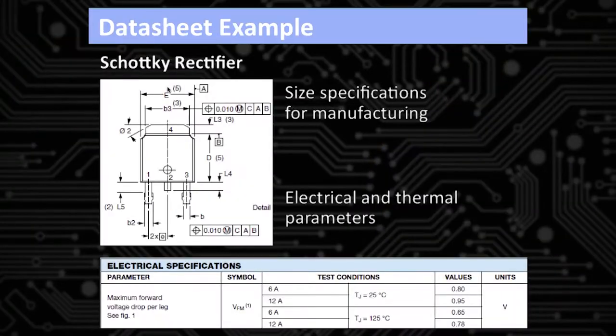Now other information, just a sample of some of the other information in the datasheet, you find electrical parameters and thermal parameters, you know, what temperature can this thing run at.